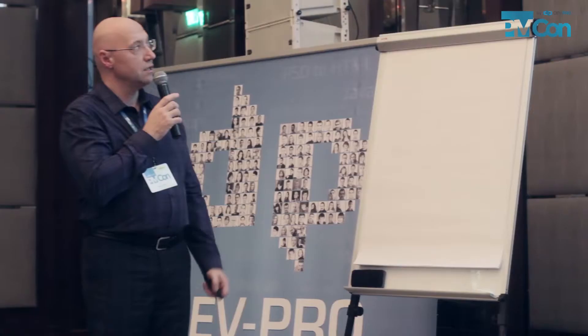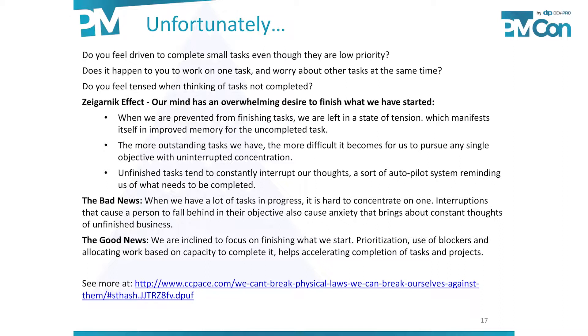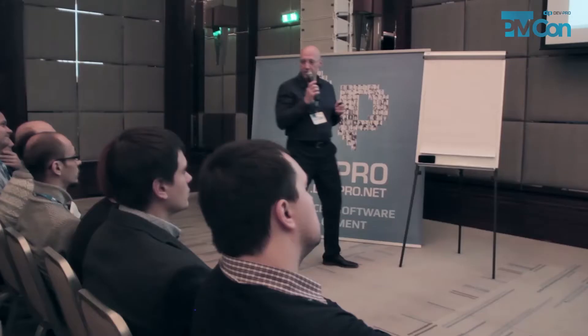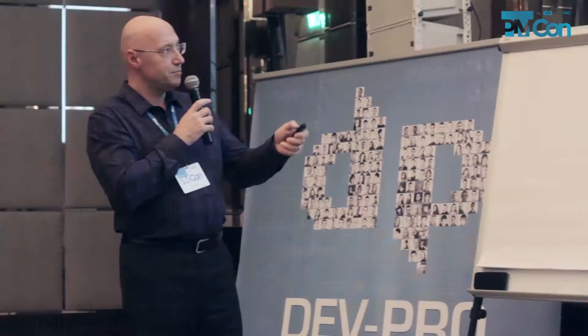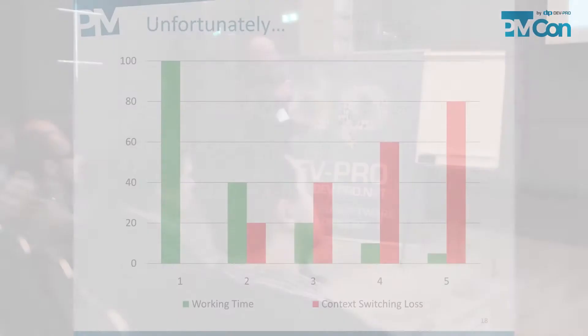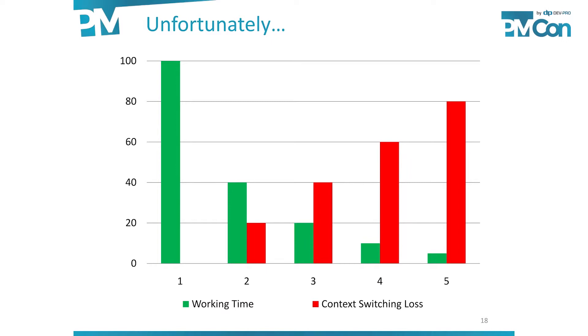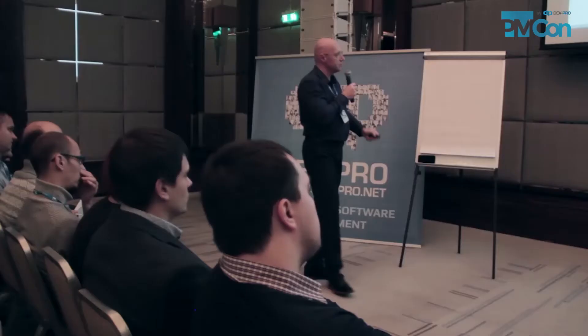We think we can multitask — employers even look for people who are able to multitask, and I put it on my resume years ago, probably that's how I got the job at Microsoft. But science proves that when we work on one thing we focus on it 100 percent. When we try to do two things at once, we don't really do two things simultaneously — we do a little bit here, a little bit on something else, and go back and forth. There's a 20 percent cost of attention that goes to context switching, and that cost grows exponentially. Everything seems to take longer and longer and we're not able to finish anything.